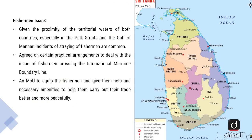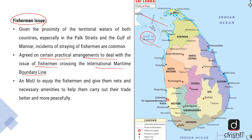A very thorny issue between India and Sri Lanka is the issue of fishermen. Given the proximity of the territorial waters of both countries, especially in the Palk Strait and the Gulf of Manar, there have been incidents of fishermen crossing the international maritime boundary line by mistake. During times when the relationship was strained, this led to firing and deaths. India and Sri Lanka agreed to practical arrangements to deal with the issue of fishermen in a more humane manner, and also signed an MOU to equip fishermen with nets and necessary amenities so they can carry out their trade better and more peacefully.